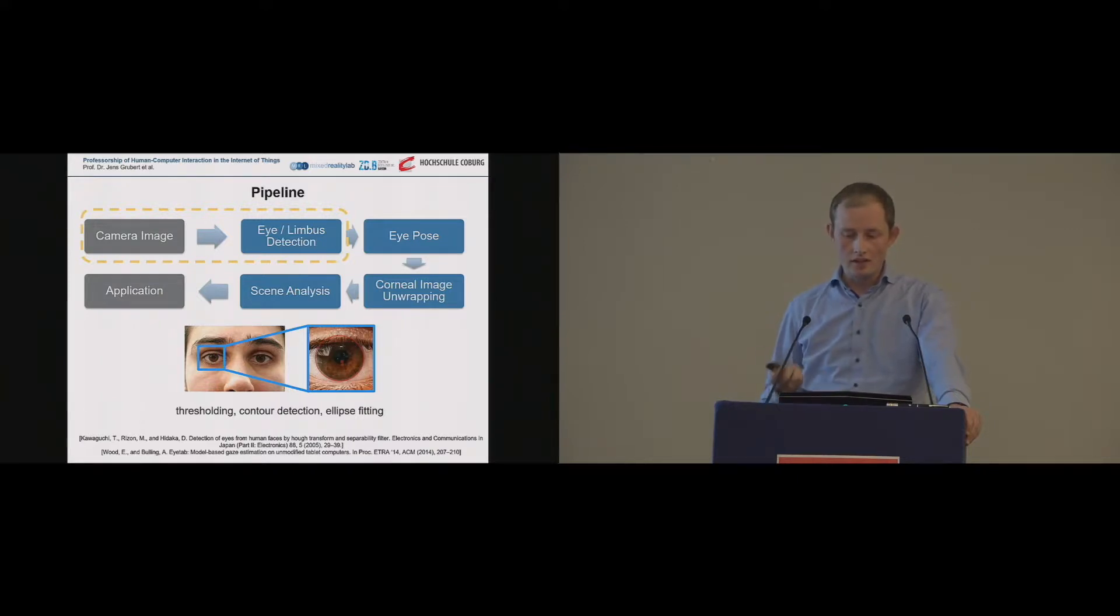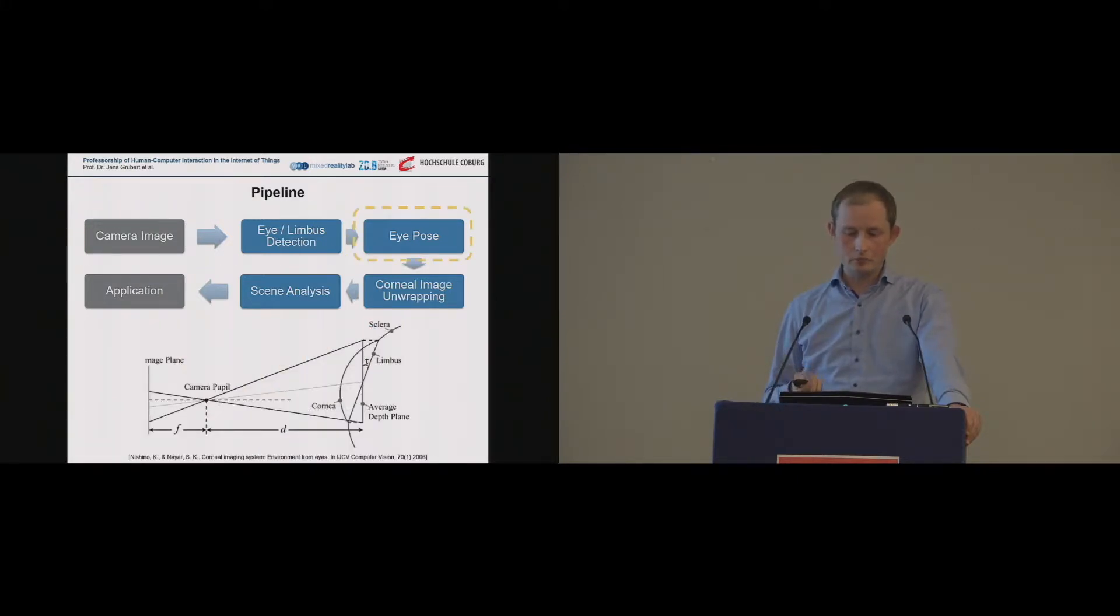Then in the second step, we want to know where the eye is relative to our mobile phone or relative to the camera. And we use a very simple model, which is known from the literature, which basically assumes two intersected spheres of certain sizes, and a weak perspective projection. And then if you know those sphere sizes, those spheres' diameters, you can relatively easily compute the pose of the eye relative to the camera center.